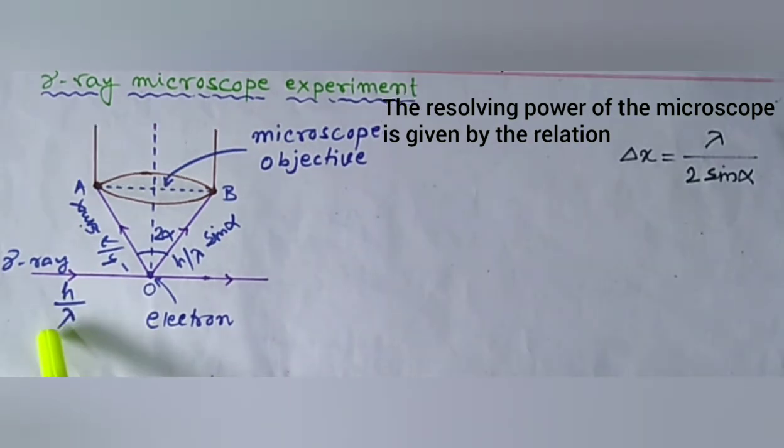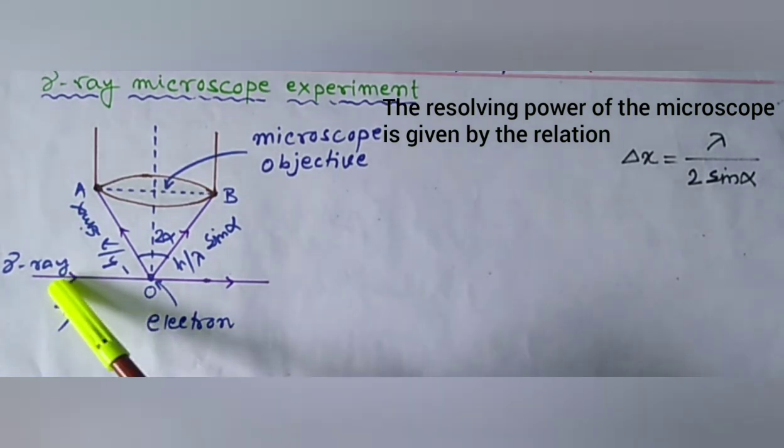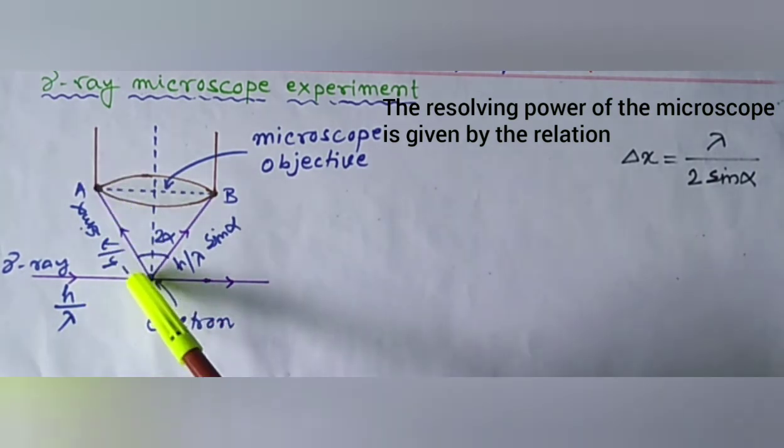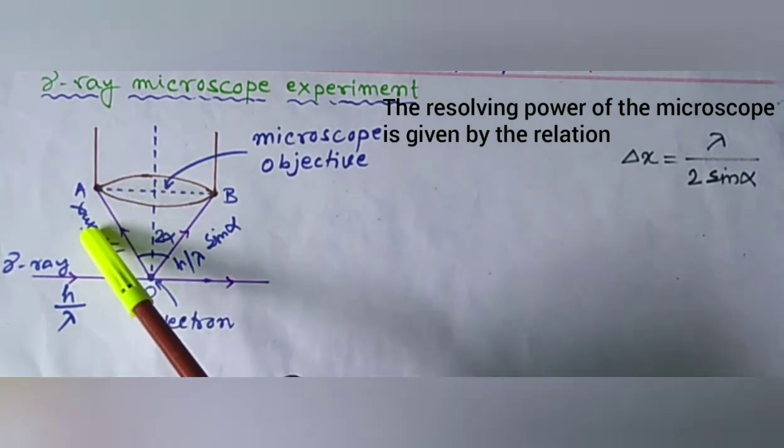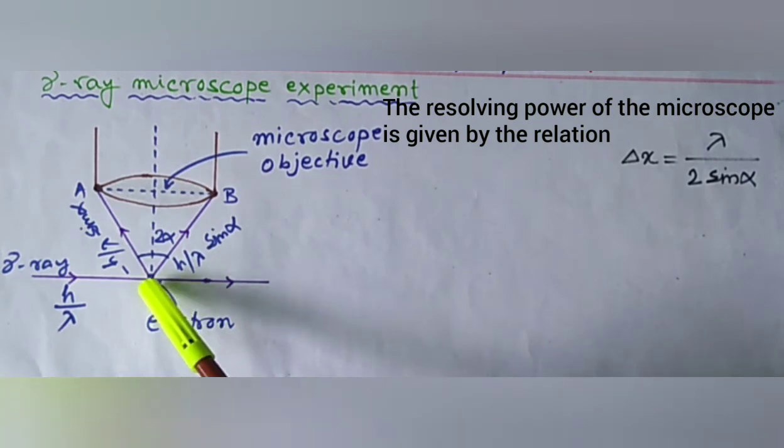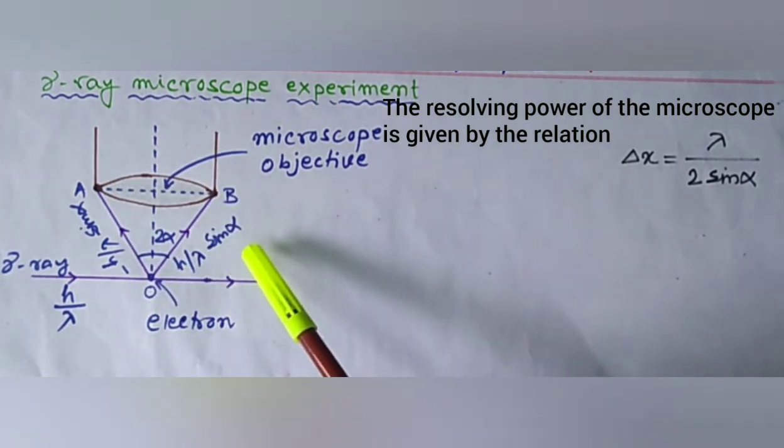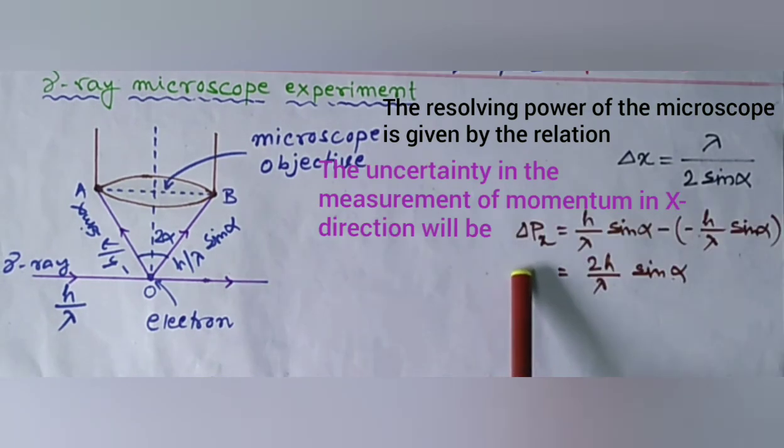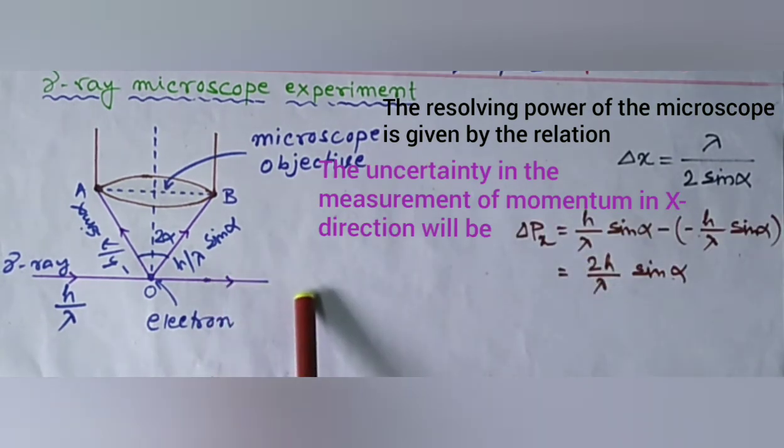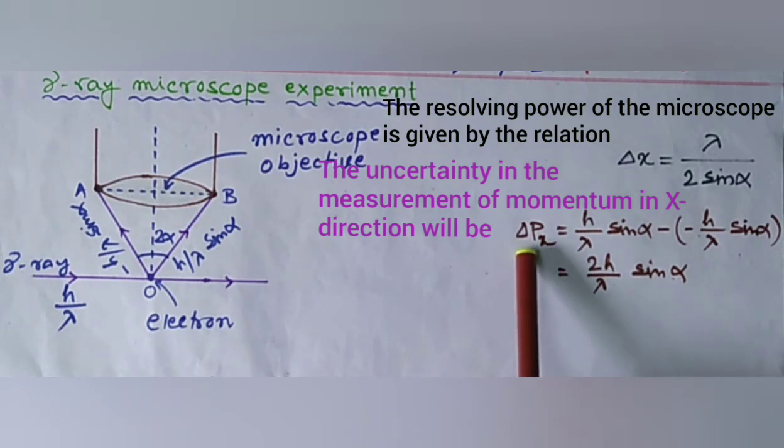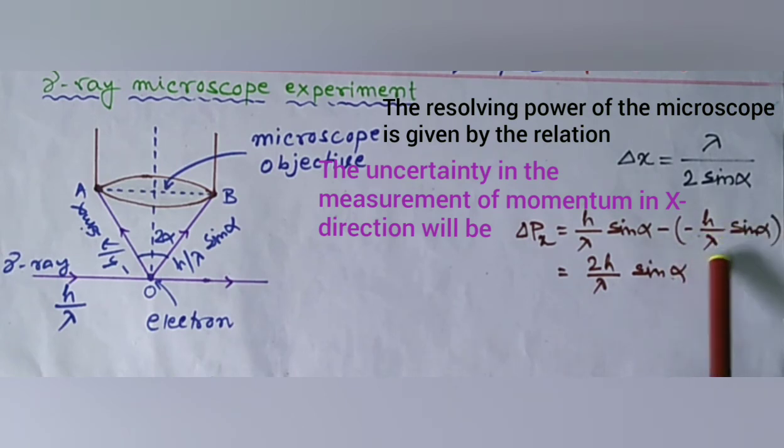The momentum imparted by the gamma ray to the electron is of the order of h by lambda. The component of this momentum along O-A is minus h by lambda sin alpha, and along O-B is h by lambda sin alpha. So the uncertainty in the measurement of momentum in x direction will be delta px equals h by lambda sin alpha minus minus h by lambda sin alpha, which equals 2h by lambda sin alpha.